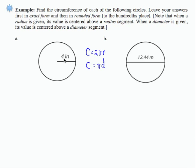In the first example, I'm presented with a radius of 4 inches. So if I want to find the circumference, I'm going to start by inputting the formula 2 pi and then the length of the radius. Now the directions say to first leave your answer in exact form, and then in rounded form.